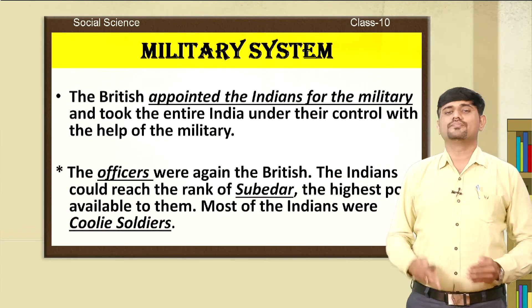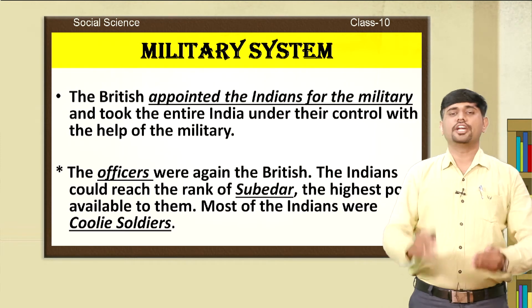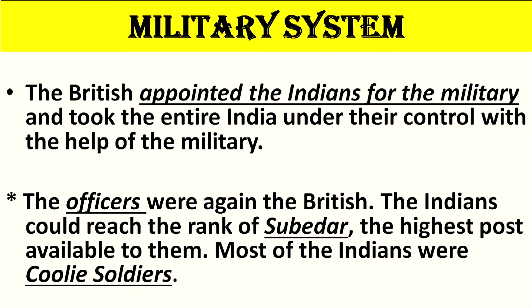Followed by the police system, let us study the military system of British India. The British appointed Indians for the military and took the entire India under their control with the help of the military. Initially, the Indians were not given importance in the military, but later they appointed the maximum number of Indians in the military. With that, the British were able to control the entire country.